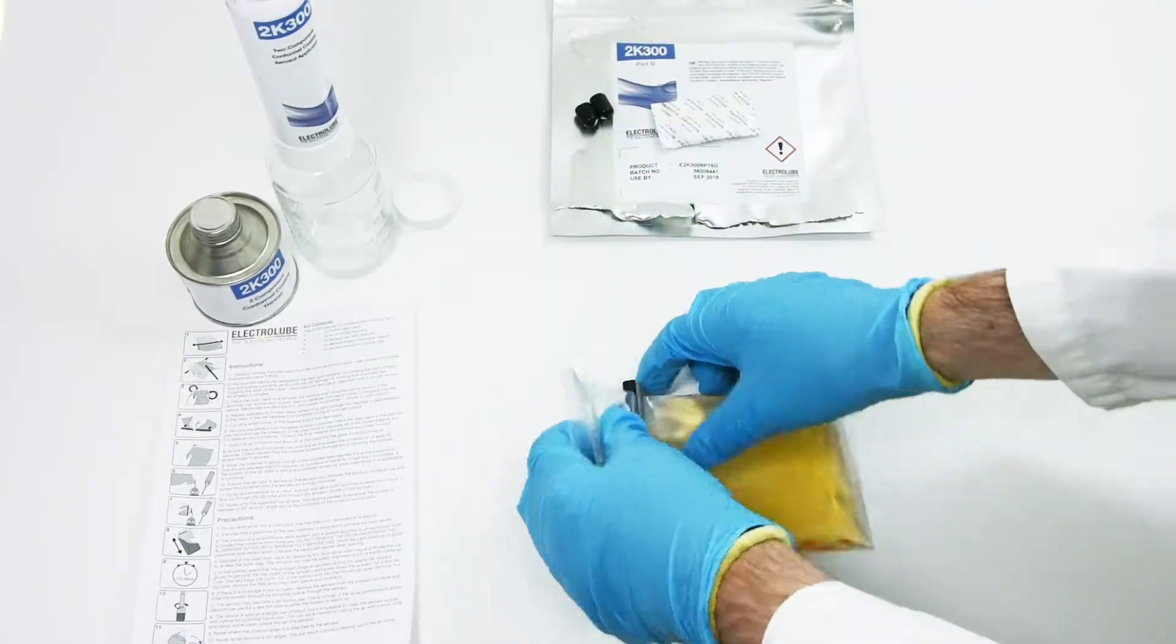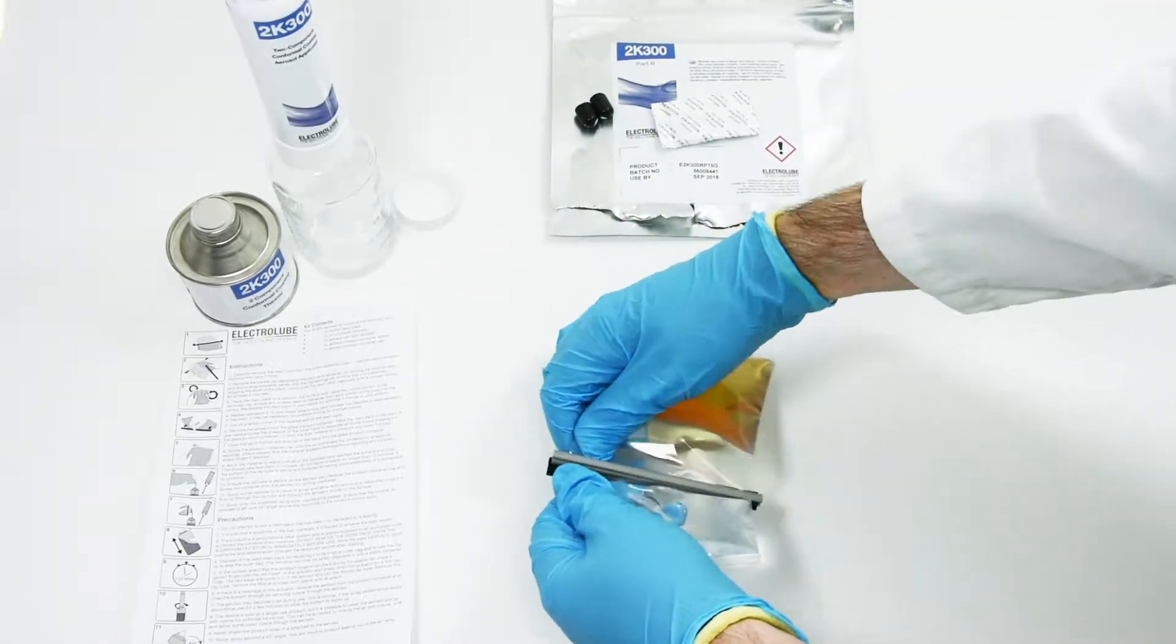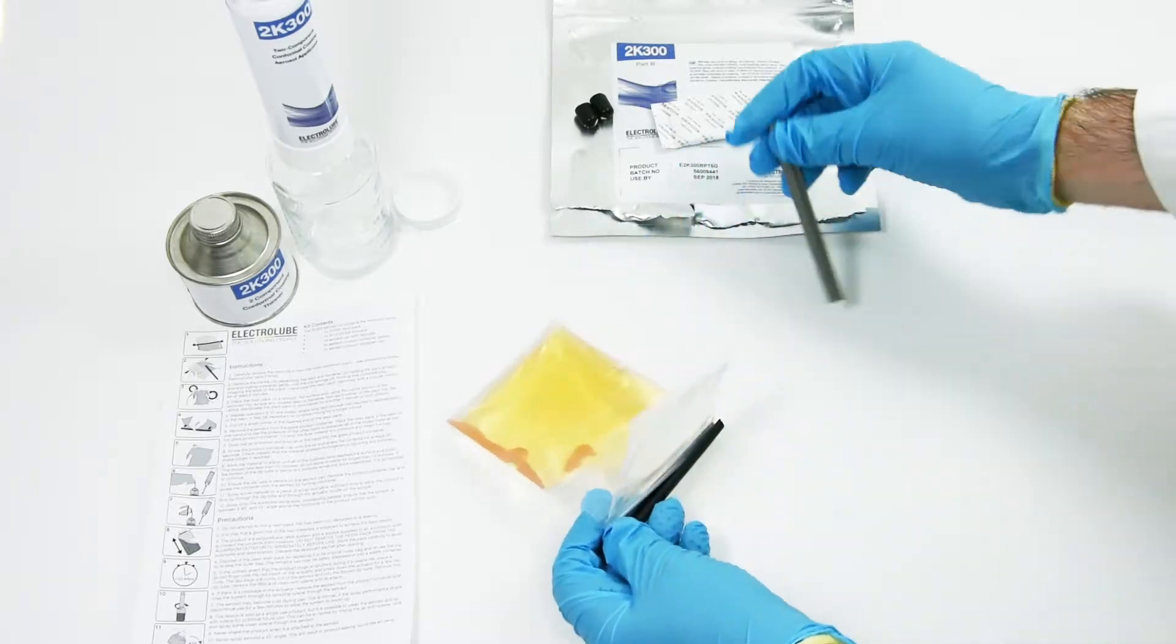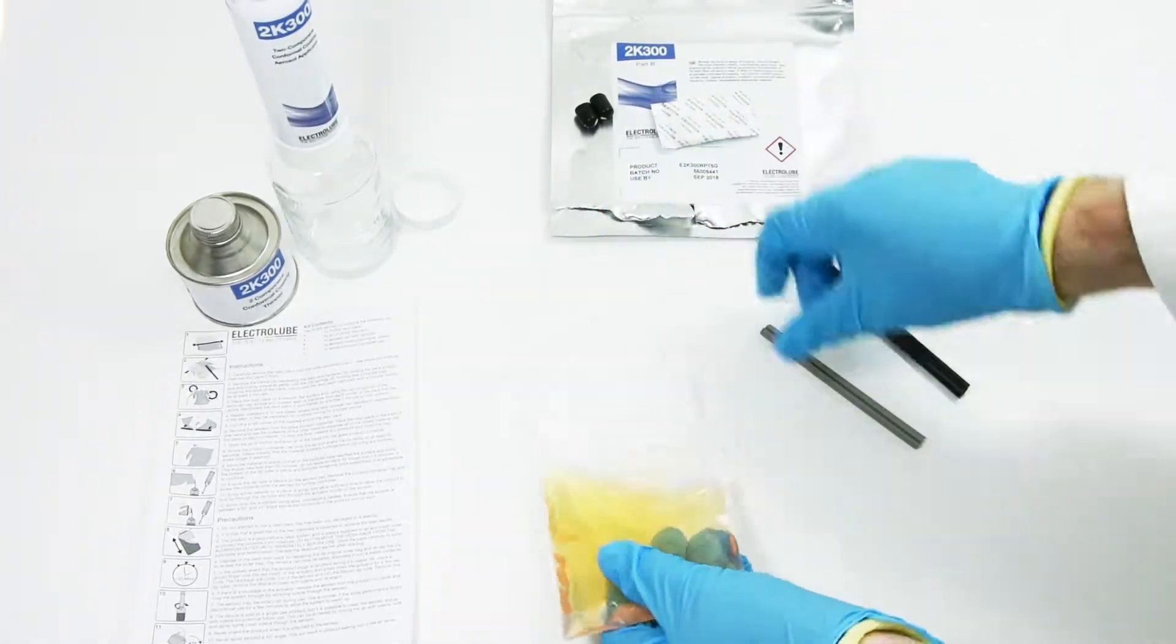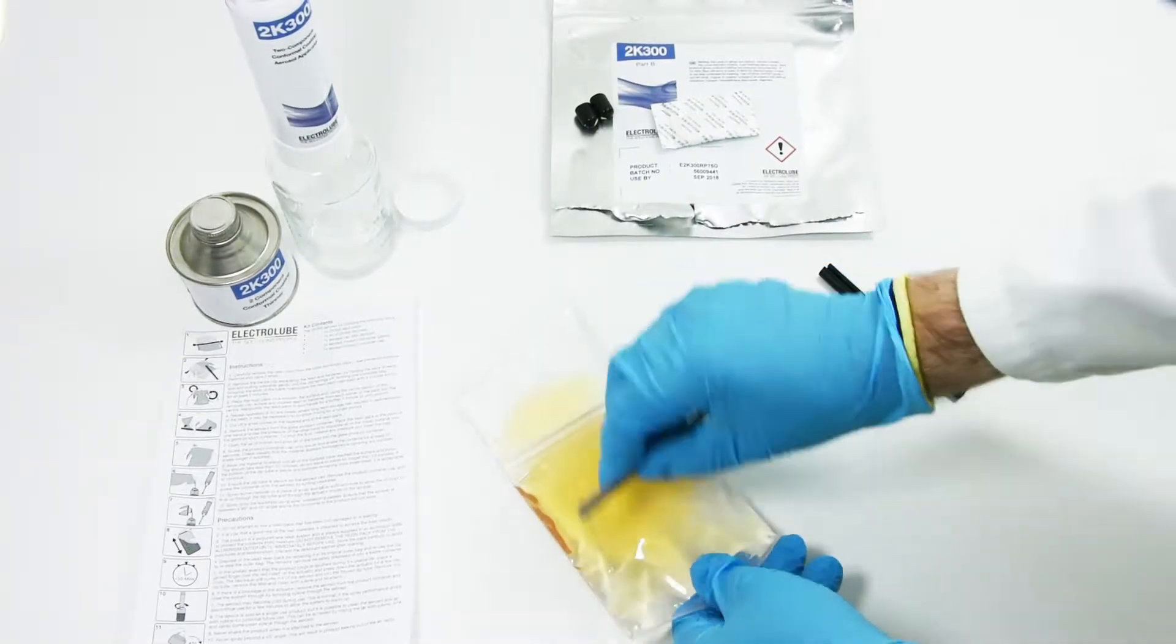Remove the center clip separating the resin and hardener by holding the pack at each end and pulling outwards gently until the clip springs off, forming one complete bag.